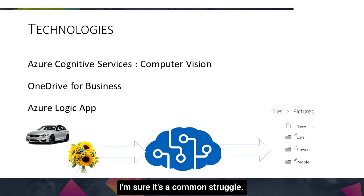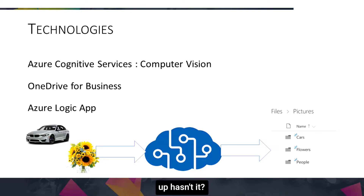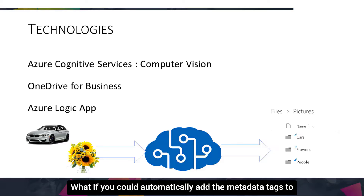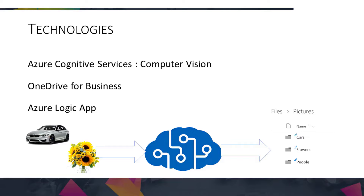I'm sure it's a common struggle. You have searched way too many combinations of words to find that image or video that you need, and it's still not popping up, isn't it? What if you could automatically add metadata and tags to any image or video that you upload, say, to OneDrive for Business, and move it to the right folder with no manual effort?